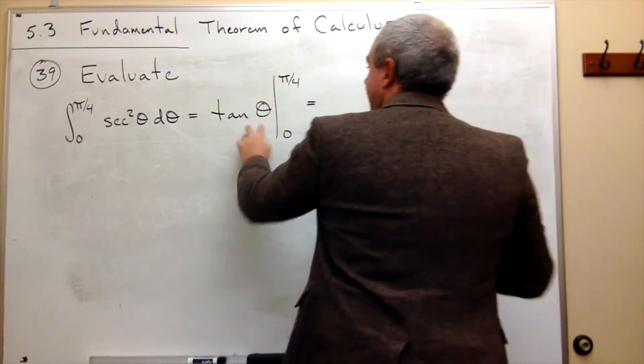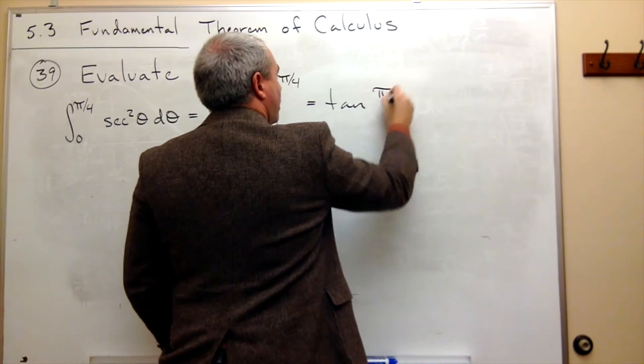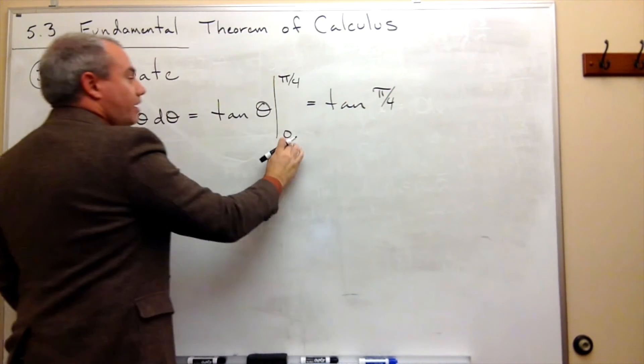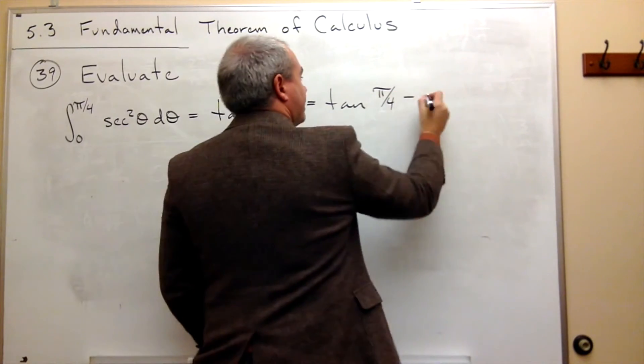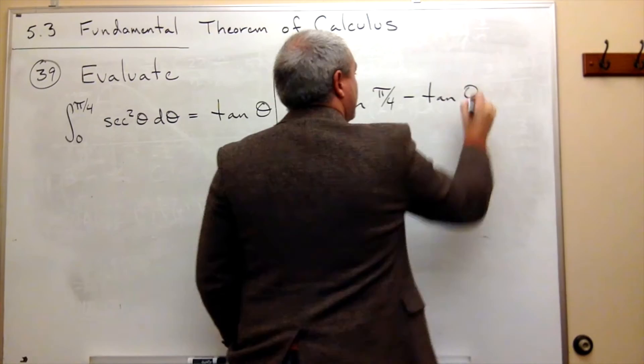In other words, I plug in π over 4 and I get tangent of π over 4 and then I plug in 0 and I subtract it. And so I subtract tangent of 0.